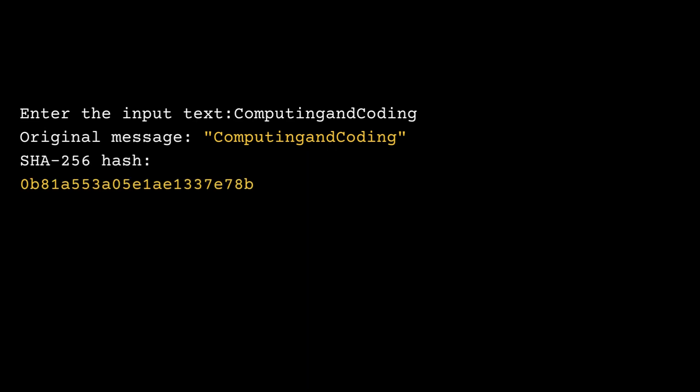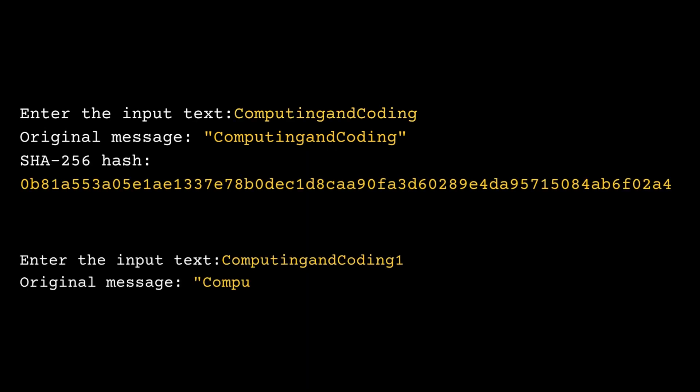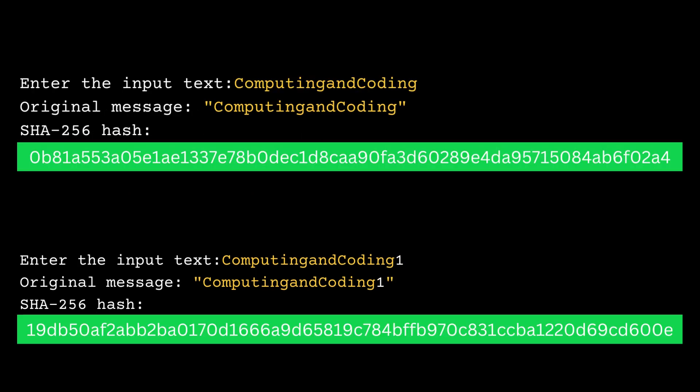Here is the output for two messages, computing and coding, and computing and coding number one. As you can see, even a small change in the input message results in a vastly different hash value. This is one of the important features of hash functions.